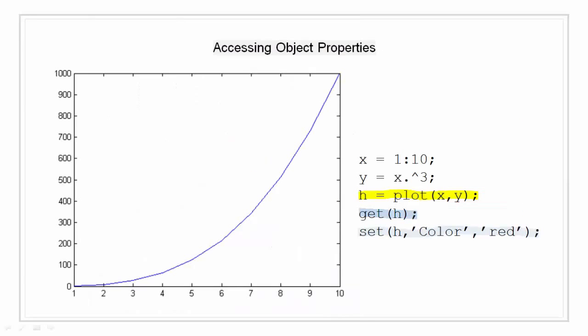Plotting functions can return objects used to create the graph. For example, here the whole figure in the plot of x and y is returned back to h. We can see all the properties using get h and set some properties like colors, line width and others using the function set.